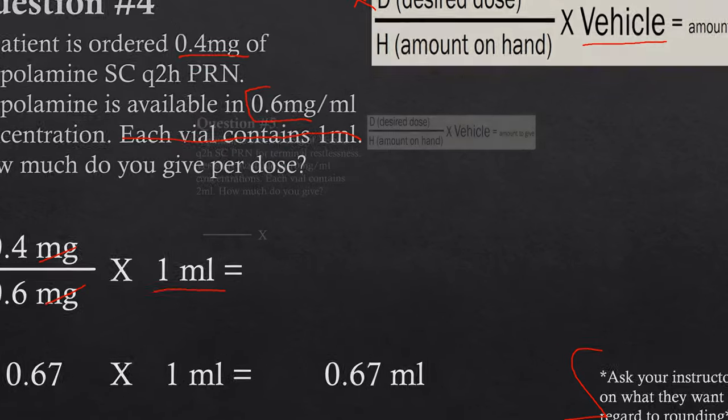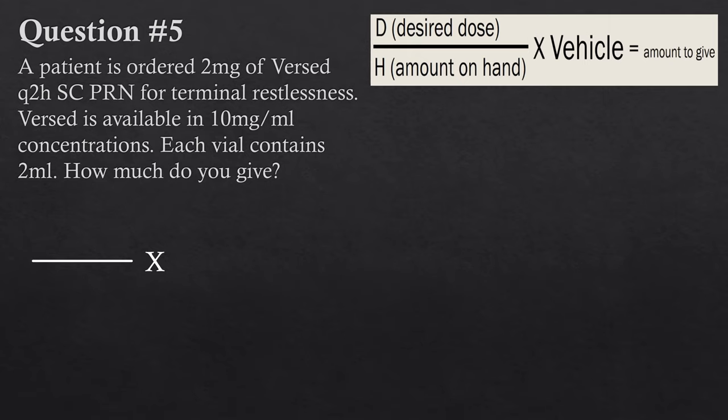Question five: a patient has ordered 2 milligrams of Versed Q2H subQ PRN for terminal restlessness. Versed is available in a 10 milligram per mL concentration; each vial contains two milliliters. How much do you give? Pause and try it yourself. Starting with the formula: the desired dose is 2 milligrams — that's what the patient has ordered, so we put that at the top.